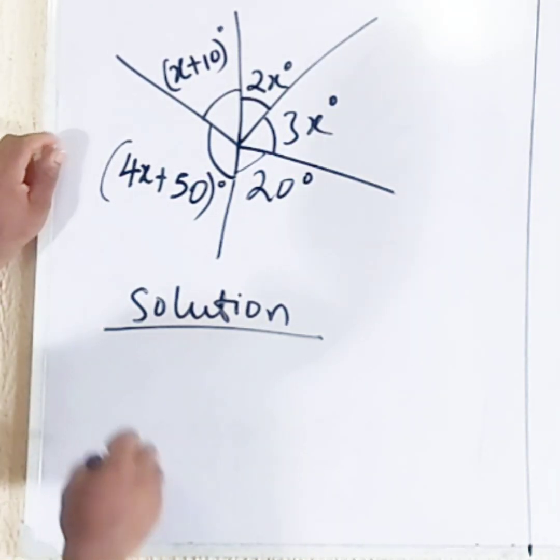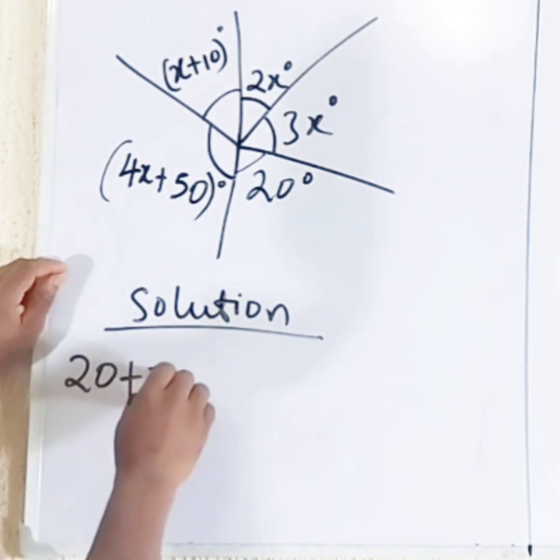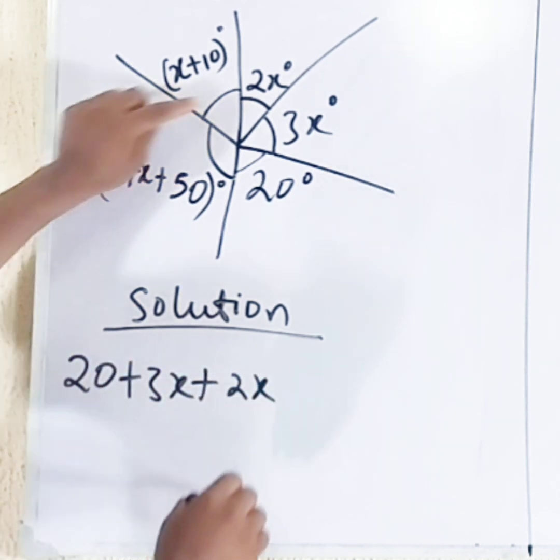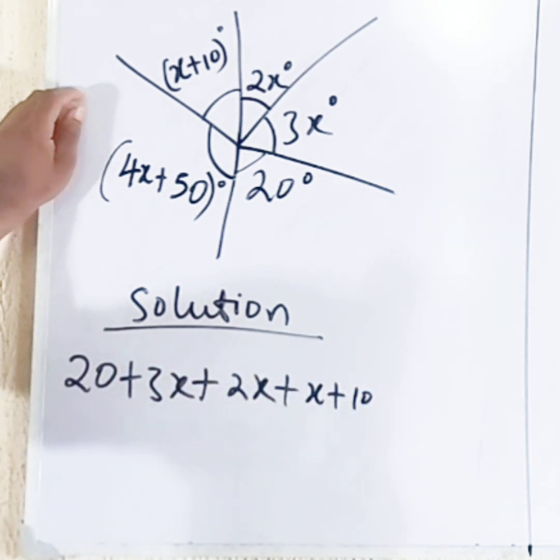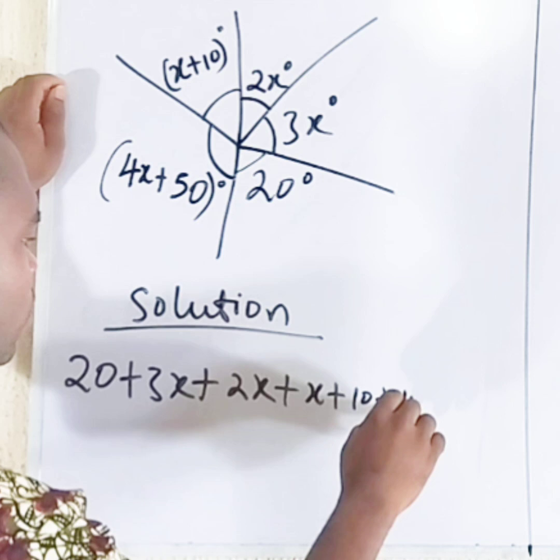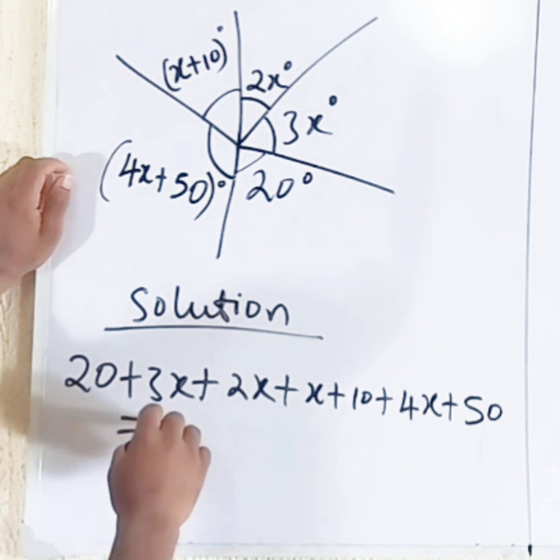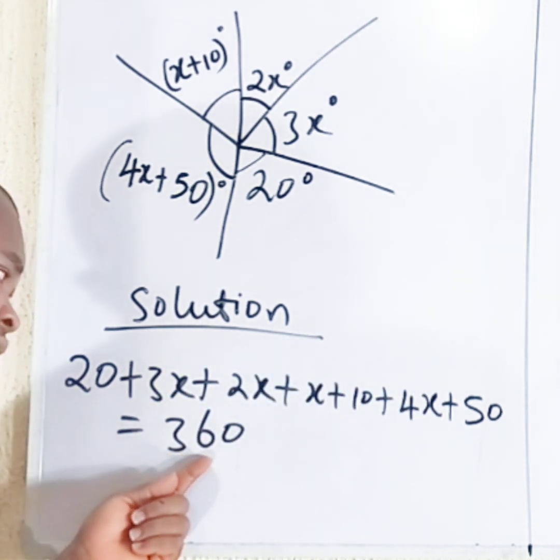So we have 20 plus 3x plus 2x plus x plus 10 plus 4x plus 50. Everything should be added, and the sum equal to 360 degrees.